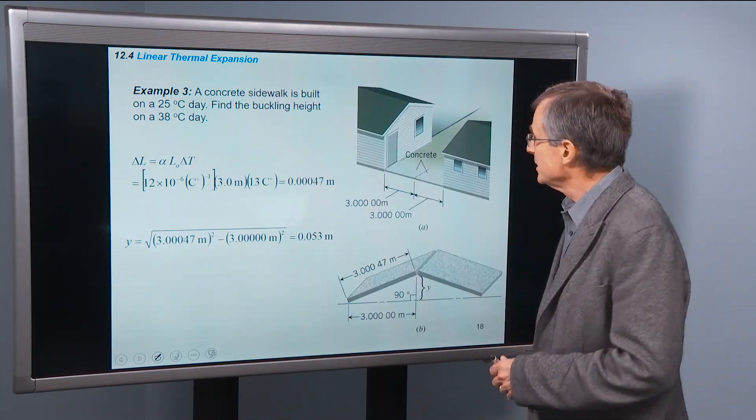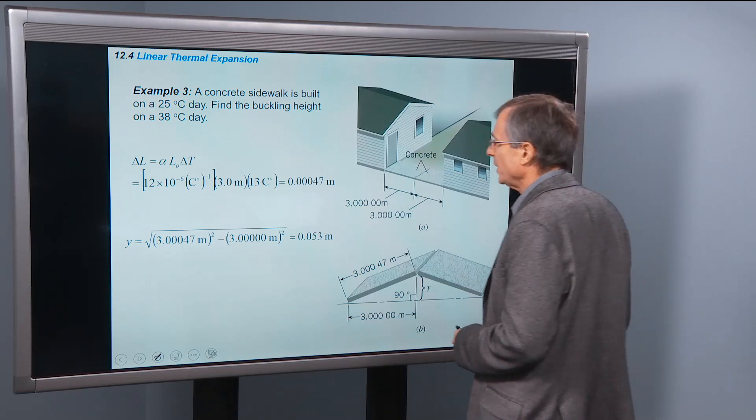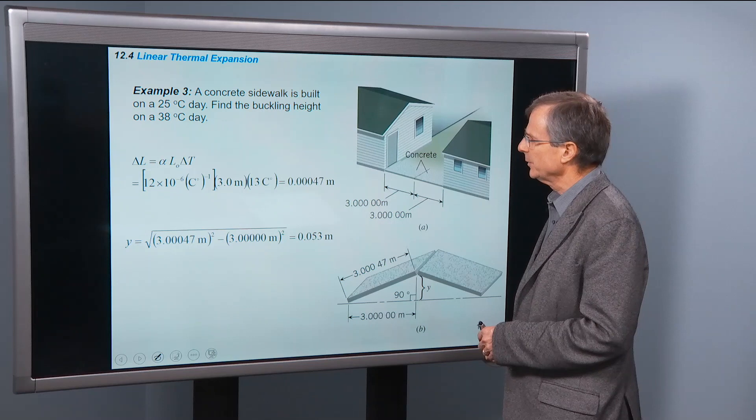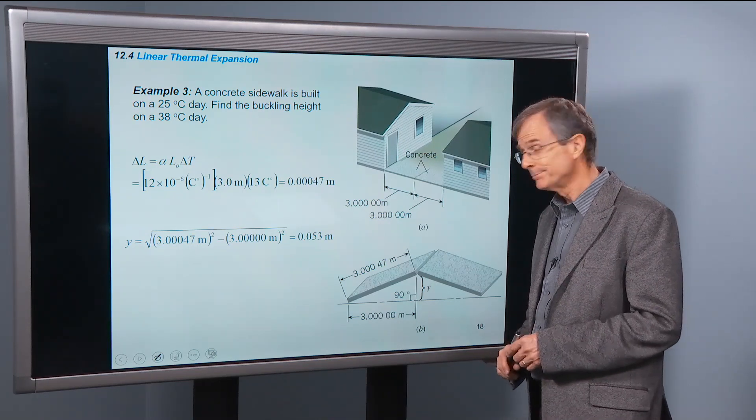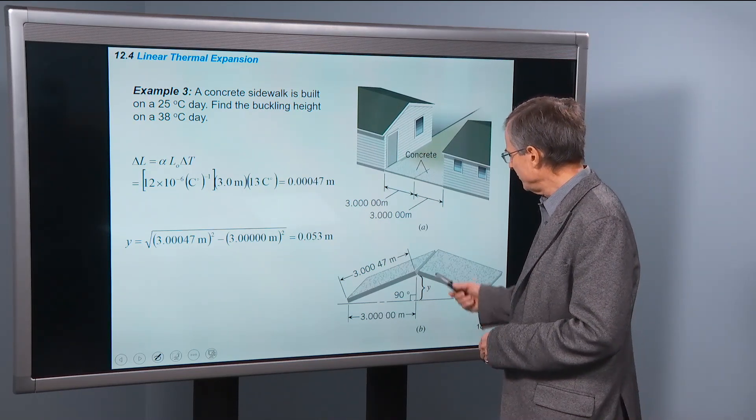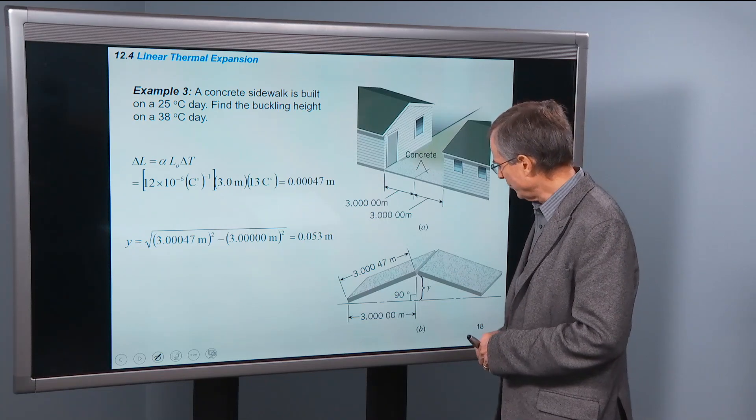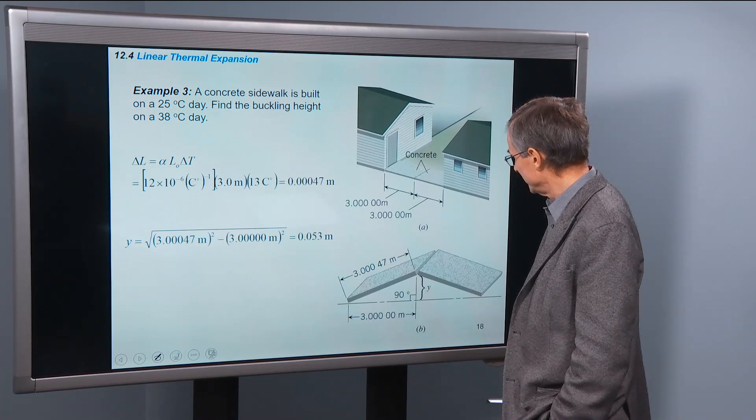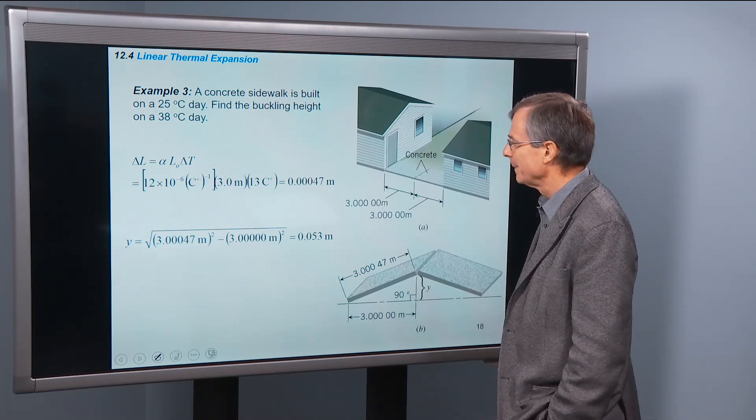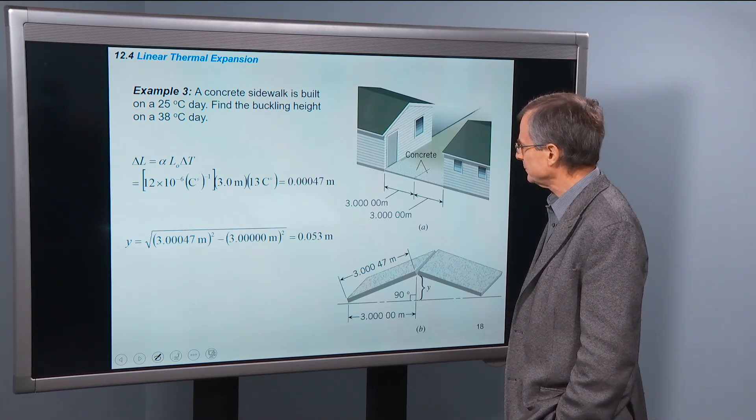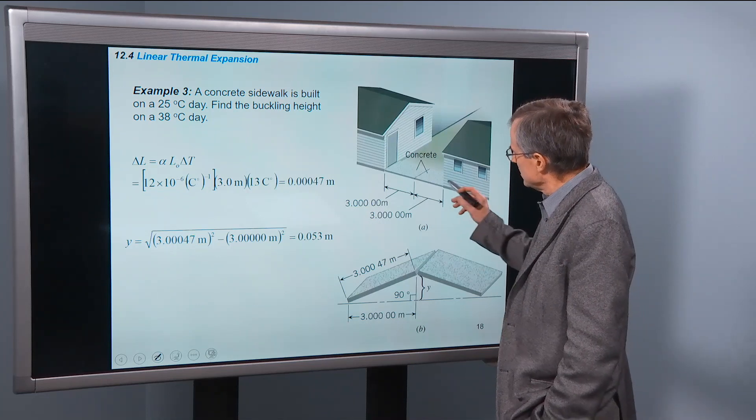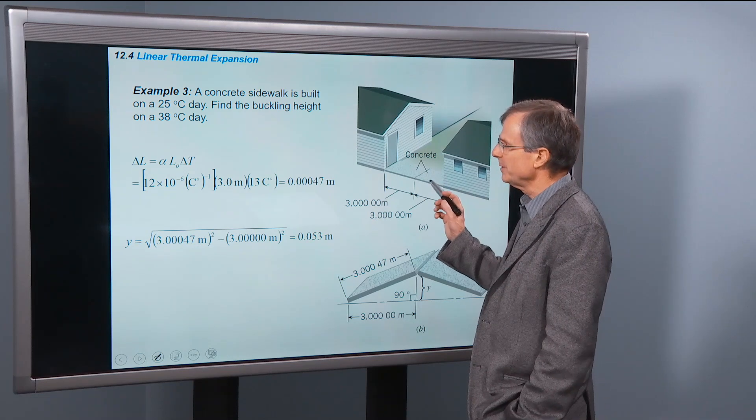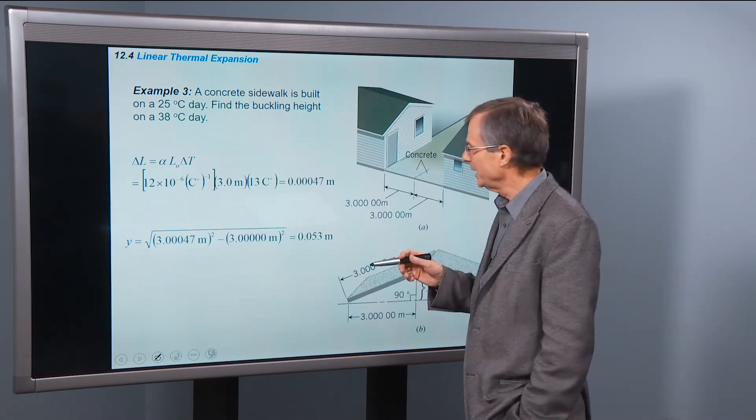A concrete sidewalk is built on a 25 degree day. Find the buckling height on a 38 degree day. And some of you have seen this. We had a neighbor in Vernal that had a buckling problem like that. It was pretty spectacular, nice little hollow space under there. So it was built just right between these two houses on a 25 degree day. But what happens on a 38 degree day?